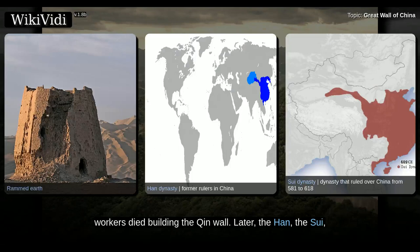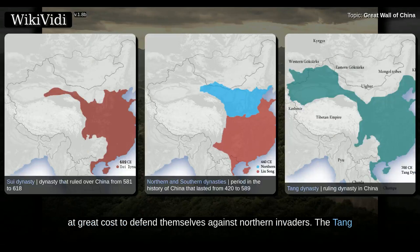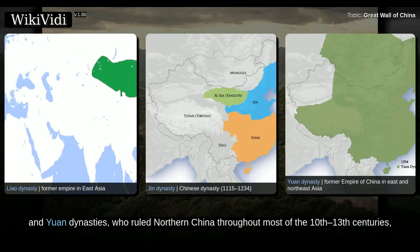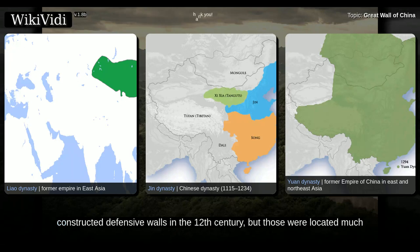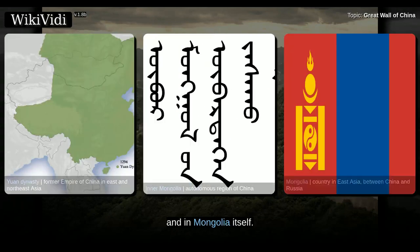Later, the Han, the Sui, and the northern dynasties all repaired, rebuilt, or expanded sections of the Great Wall at great cost to defend themselves against northern invaders. The Tang and some dynasties did not undertake any significant effort in the region. The Liao, Jin, and Yuan dynasties, who ruled northern China throughout most of the 10th–13th centuries, constructed defensive walls in the 12th century, but those were located much to the north of the Great Wall as we know it, within China's province of Inner Mongolia and in Mongolia itself.